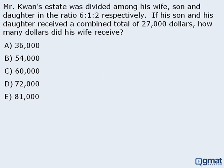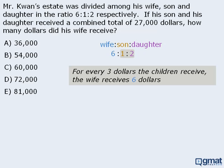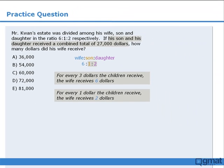The next approach is much faster. If we take our given ratio and combine the money the son and daughter receive, for every $3 the children received combined, the wife received $6. Simplifying further, for every $1 the children received combined, the wife receives $2. So if the children received a combined amount of $27,000, the wife must have received twice that — $54,000 — which means the answer is still B.